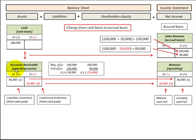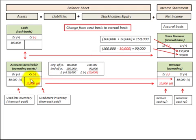Looking at our accounts receivable: if we had an increase during the year of $50,000 in our accounts receivable, that means we've also had an increase in our revenue of $50,000. So we take our cash basis of $100,000 and add that $50,000 increase in revenue, and we'd have $150,000 worth of sales revenue on the accrual basis.